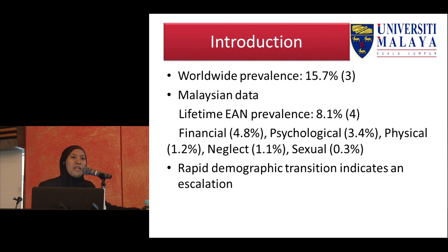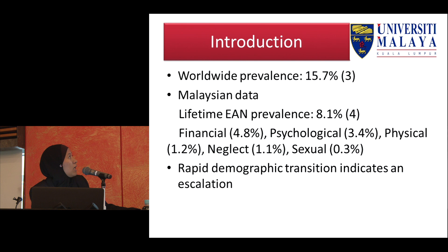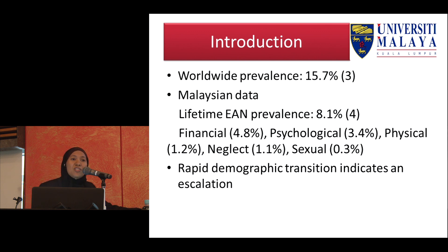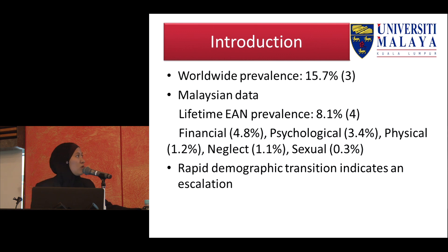There are studies — not just one but a number — which say that for every one reported case of abuse, there are five unreported cases, so the actual magnitude must be much higher. Another interesting finding from that systematic review is that globally the most common subtype is psychological abuse, but Malaysian data shows the most common subtype is financial abuse, at 5% out of our 8.1%. The second most common is psychological abuse.